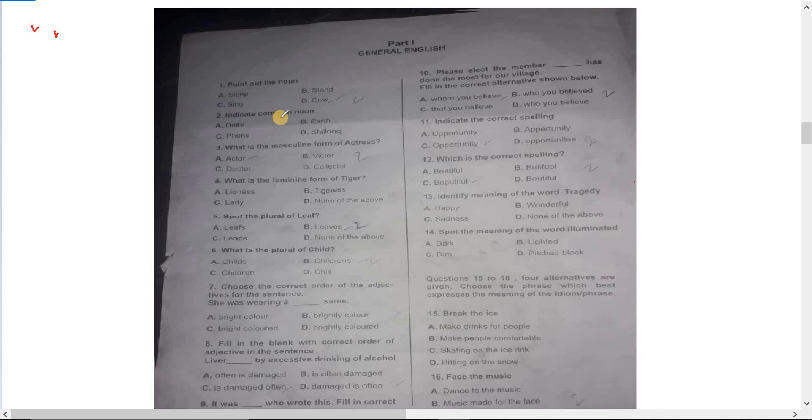This is Part 1, General English. Question number one: point out the noun. The options are sleep, stain, sing, and cow. Sleep, stain, and sing are verbs. Cow is a noun. Number D is the answer.